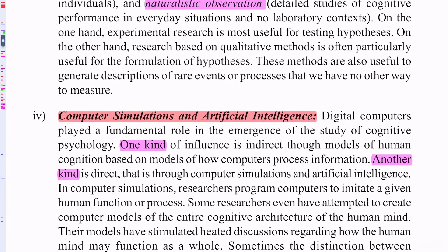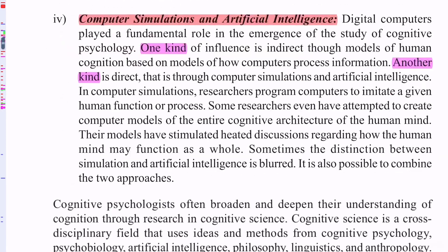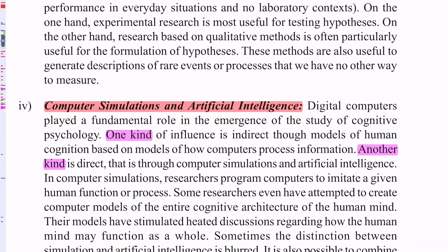Computer Simulation and Artificial Intelligence is the fourth and last method. Digital computers play a fundamental role in the emergence of the study of cognitive psychology. One kind of influence is indirect — through models of human cognition based on models of how computers process information.